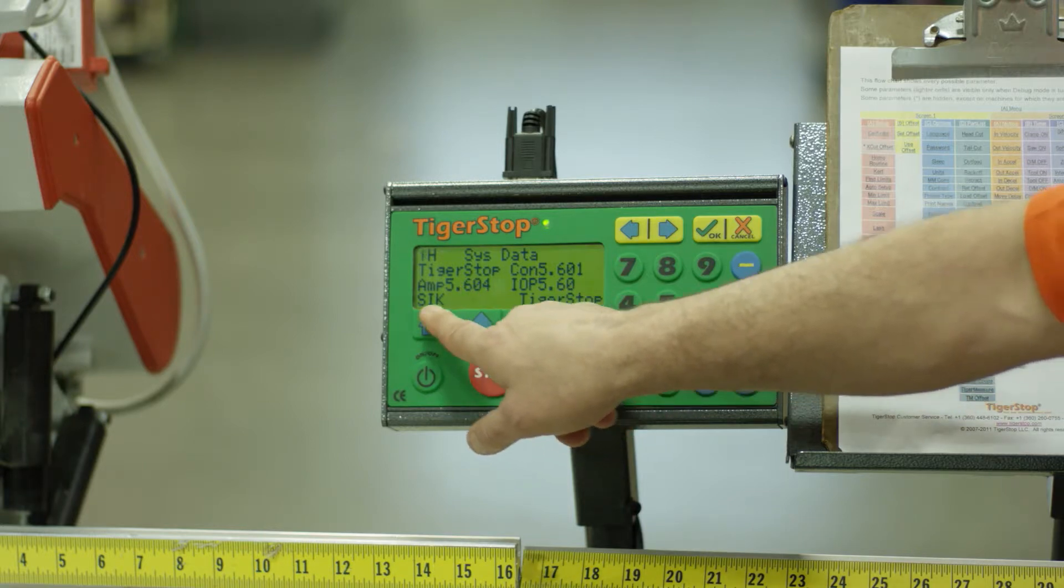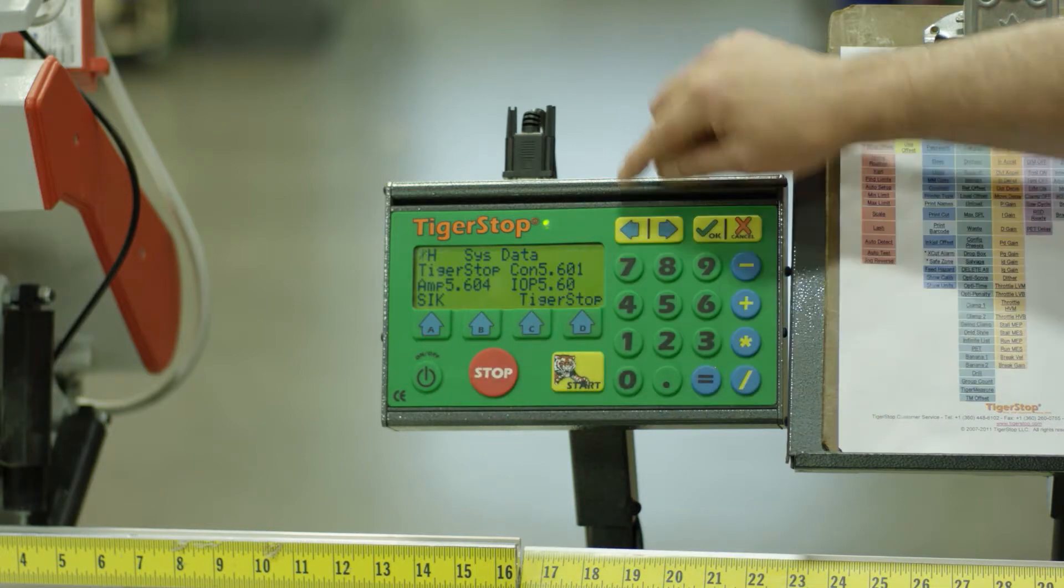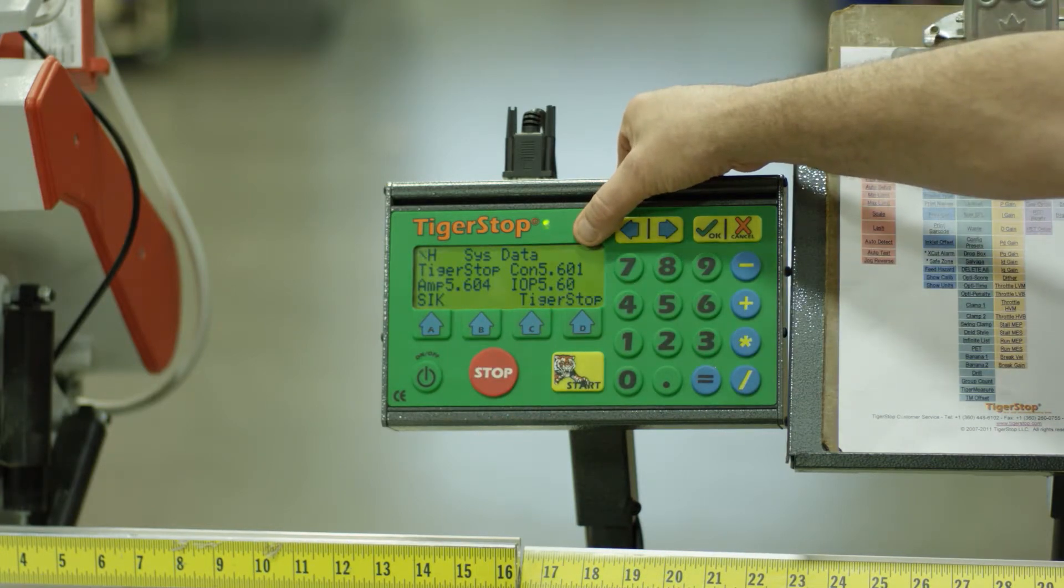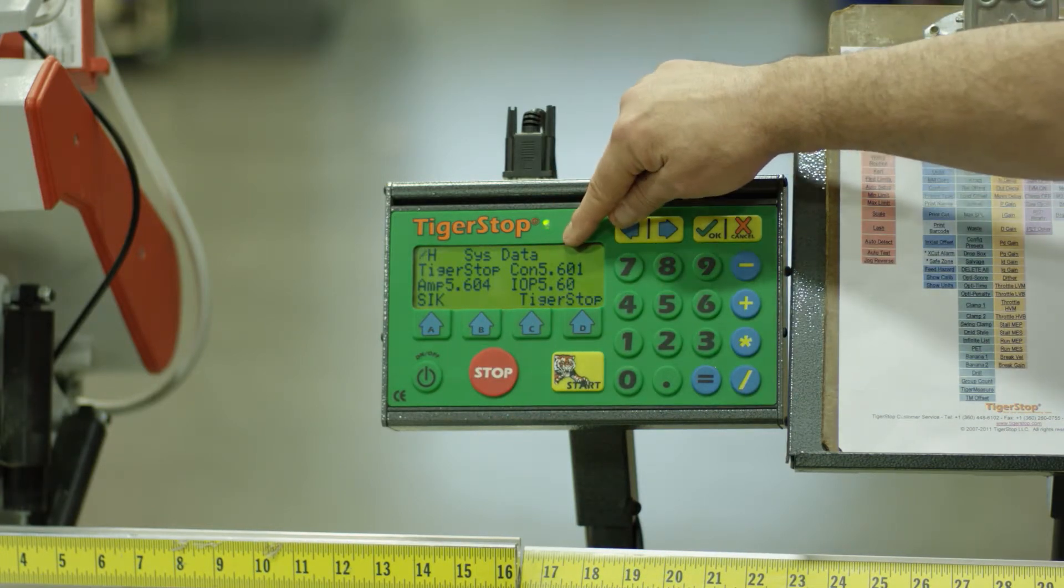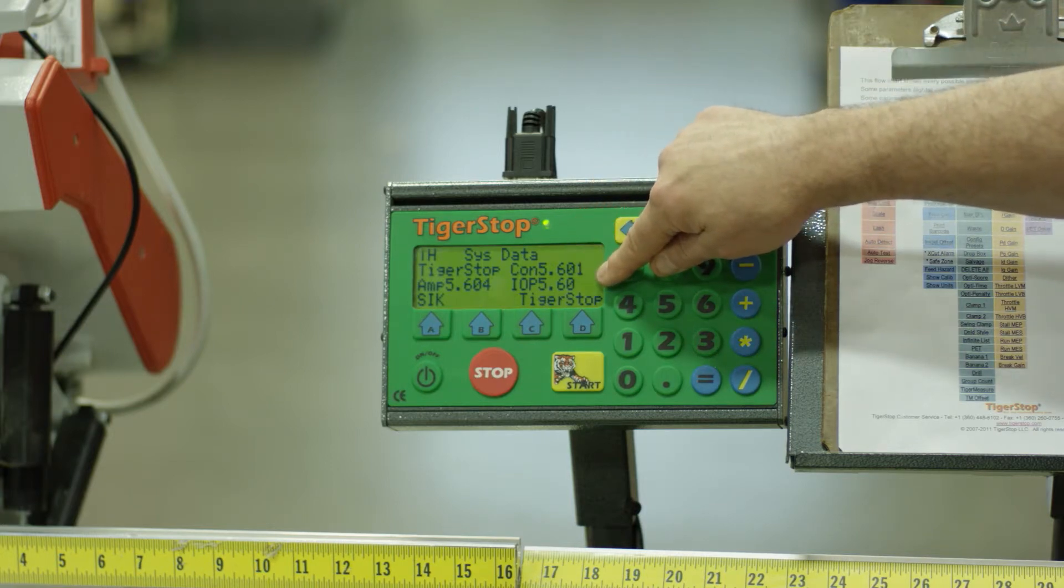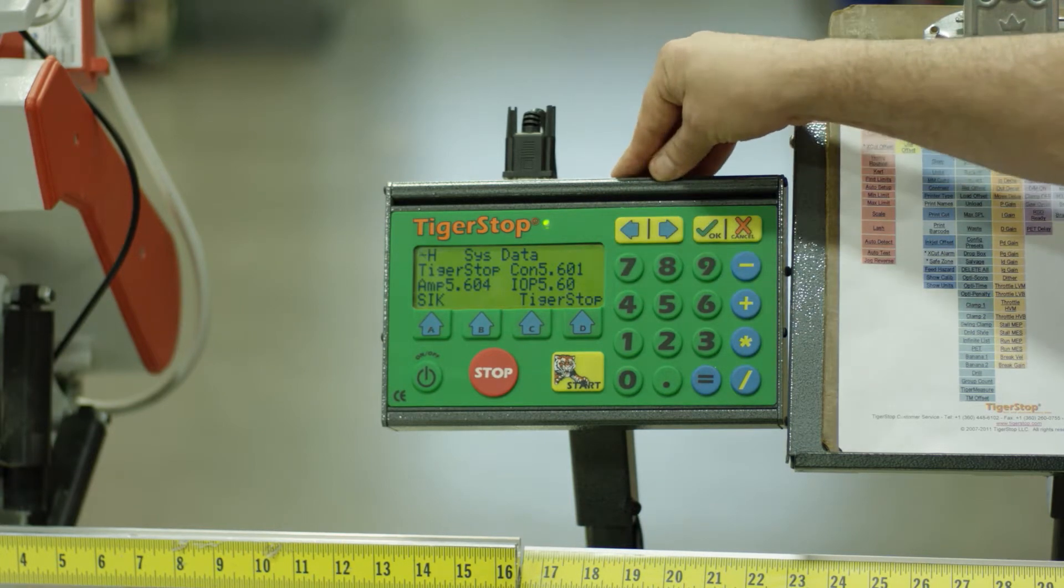It's also going to show me any interconnections that are on the machine. The software version you're concerned with will be the controller as well as the amplifier. Should your software require upgrade,